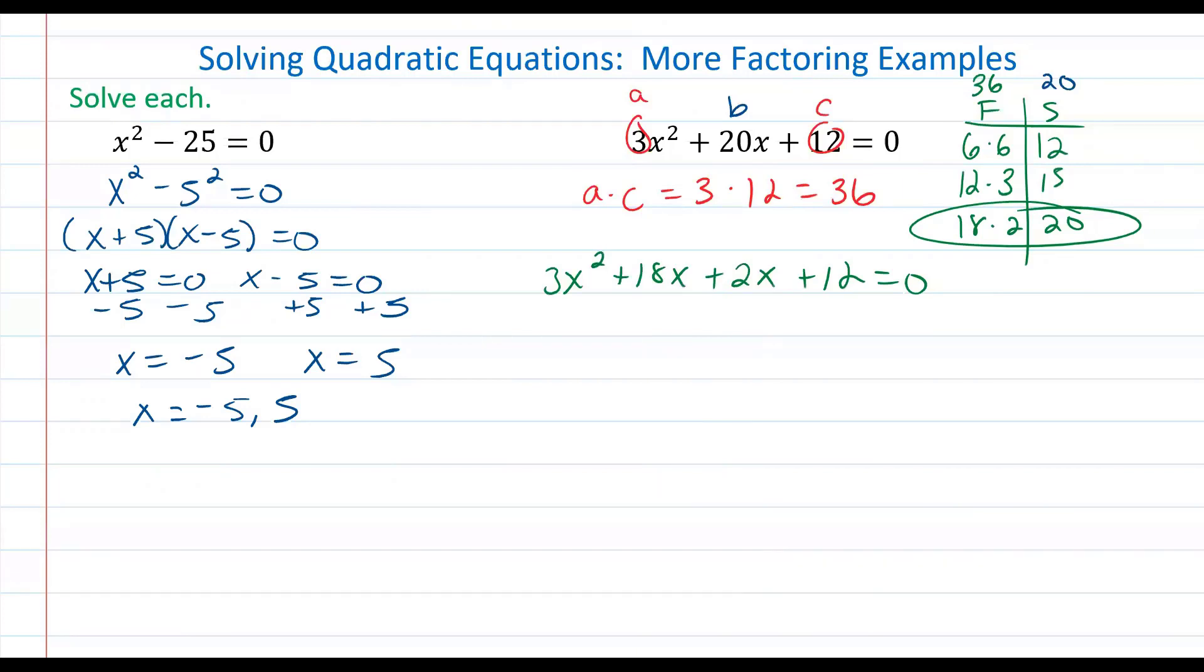What I need to do next is factor the greatest common factor from these first two terms, which is 3x. That means the other factor will be x plus 6. I want to do the same process for the second two terms but I have a goal in mind. I want one of the factors to be x plus 6. So my question is, what do you factor from 2x plus 12 so that one of your factors is x plus 6? And the answer is positive 2.